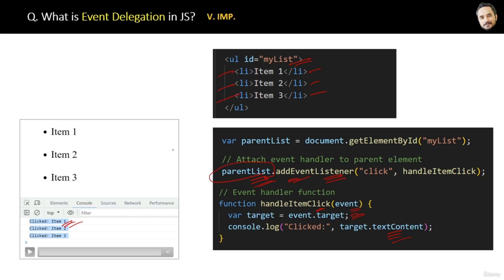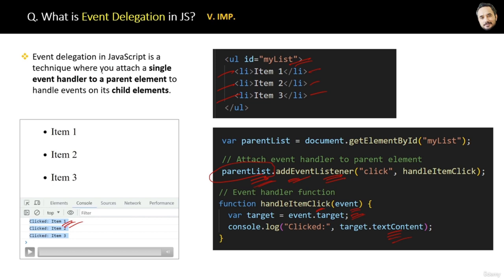The conclusion is: event delegation in JavaScript is a technique where you attach a single event handler to the parent element to handle events on all of its child elements. The concept is now fixed in your memory.